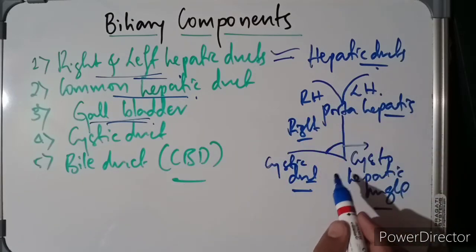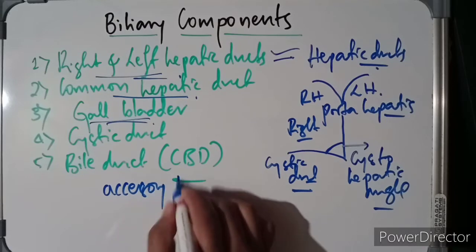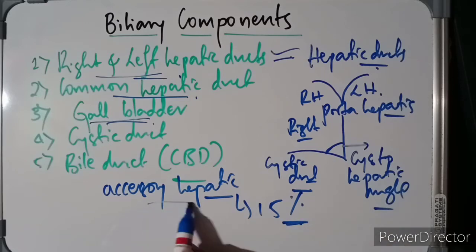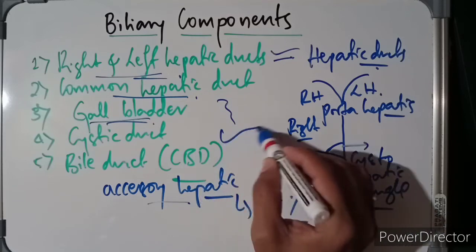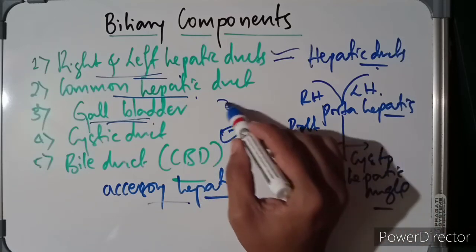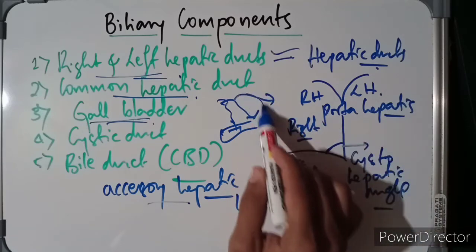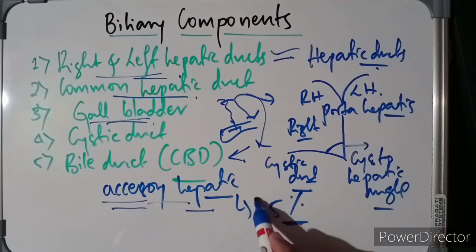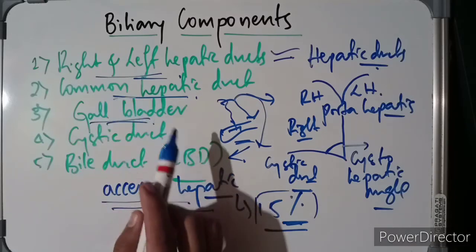The common hepatic duct arises from the right and left hepatic ducts. We also see accessory hepatic ducts in about 15 percent of cases. Accessory hepatic ducts are ducts other than the common hepatic duct that open into either the gallbladder, the cystic duct, the common hepatic duct, or the common bile duct.